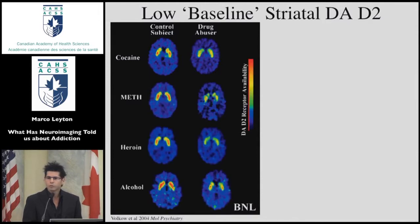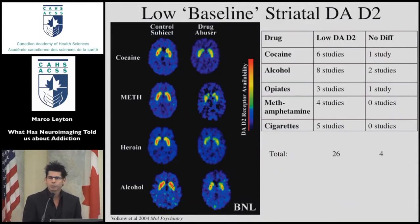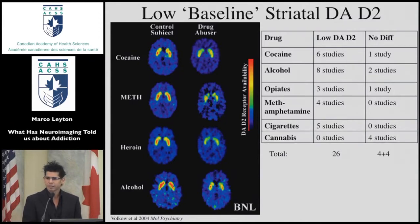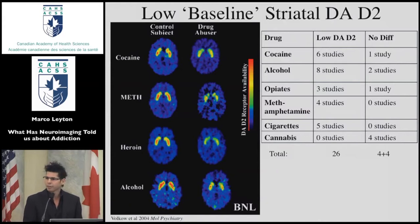Her own group alone has gone on to reproduce that effect across a wide range of types of addictions, and this is really one of the best replicated findings within biological psychiatry — an impressive amount of consistency. The one interesting exception is individuals with cannabis use disorders; four studies to date have not identified a change in these baseline dopamine receptors within the striatum.